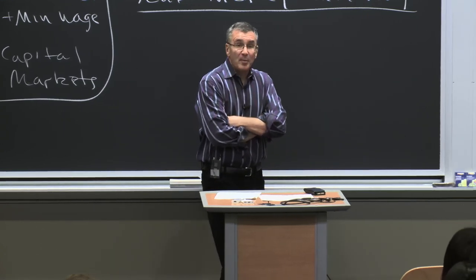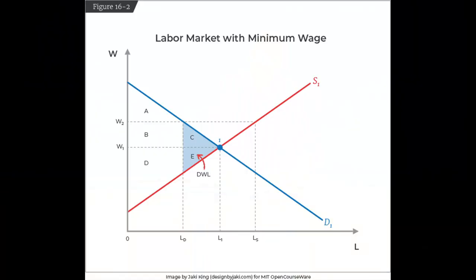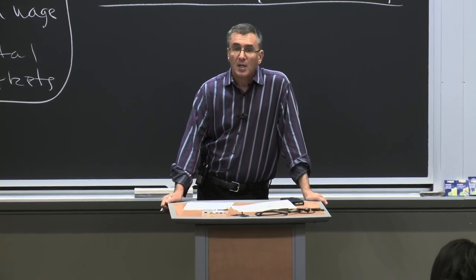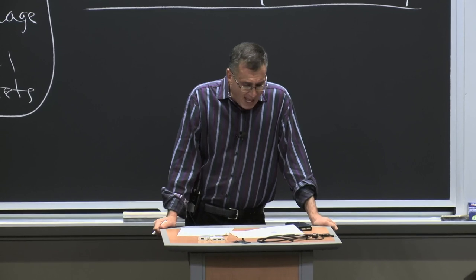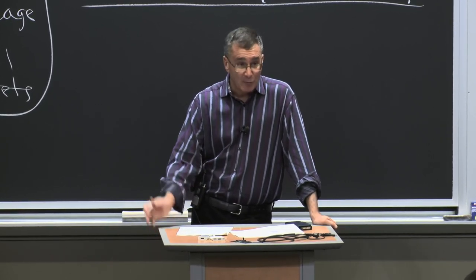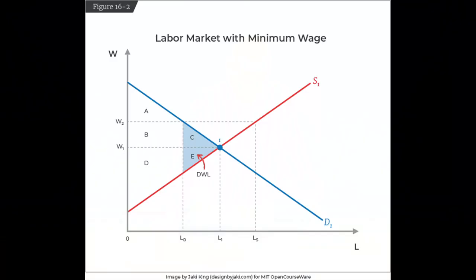Now let's imagine we add a minimum wage. So let's go to figure 16.2. This is a regulation which says you're not allowed to pay workers below some minimum level. Let's say we set that minimum wage at the level W2, above the market wage W1. Quick question: what would happen if we passed a law setting a minimum wage below W1 — a regulation insisting you couldn't pay workers below W2, but W2 is below W1?